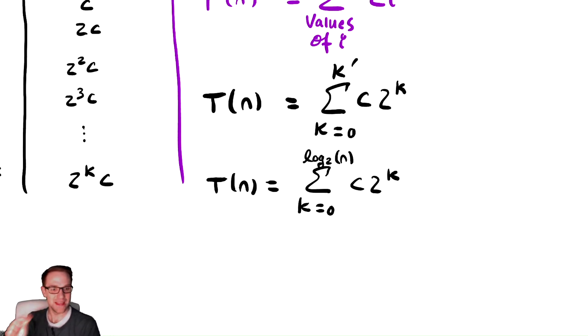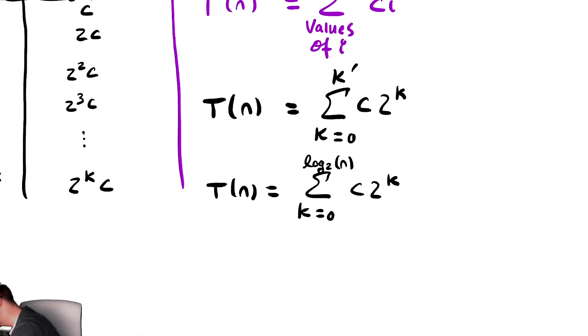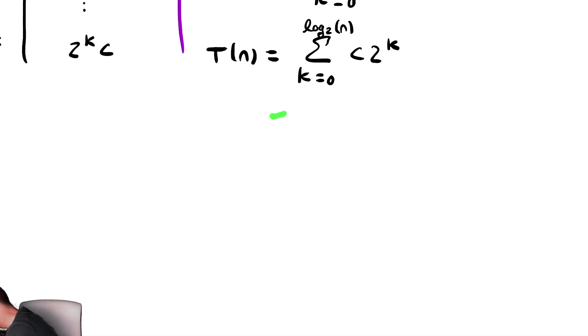Let's verify that what we wrote down here actually matches up with what I said before, because I said that this column here is what we're adding up. So, let's check that this is what we are doing. So, k starts at 0, so the terms of this summation are plug in k equals 0, that's c, plus plug in k equals 1, that's 2c, plus plug in k equals 2, that's 2 squared c.